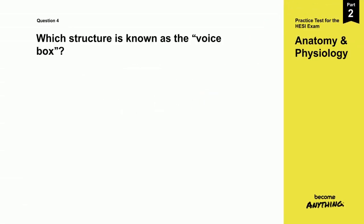Question 4. Which structure is known as the voice box? A. Pharynx. B. Trachea. C. Larynx. D. Esophagus.